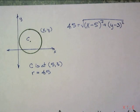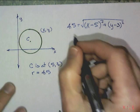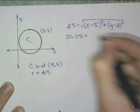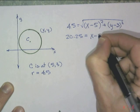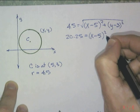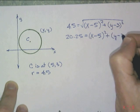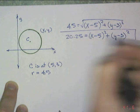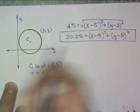Now, normally, we don't have the radicals in the equation of the circle. So, we're going to have to square that side. 4.5² turns out to be 20.25 is equal to (x - 5)² + (y - 3)². And that's your equation for that circle.